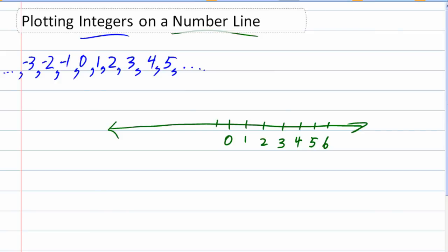We might as well go the other way too: negative 1, negative 2, negative 3, negative 4, negative 5, negative 6. I drew this symmetric so I've got an equal number of numbers on each side, but I certainly wouldn't have to do it that way.